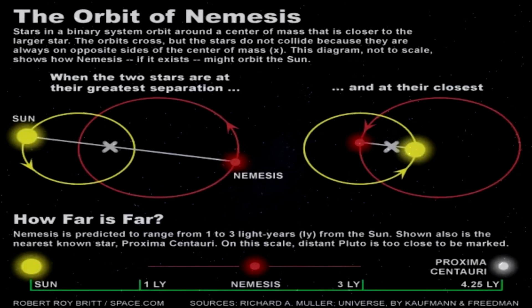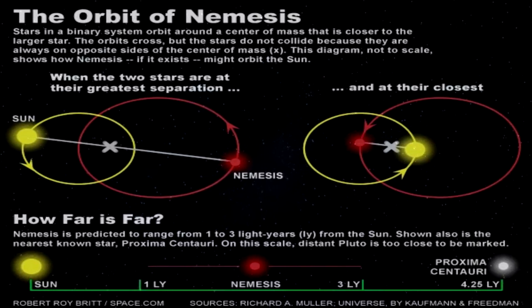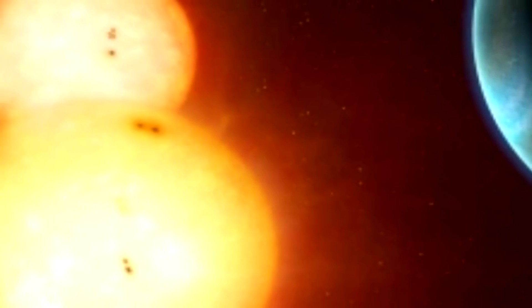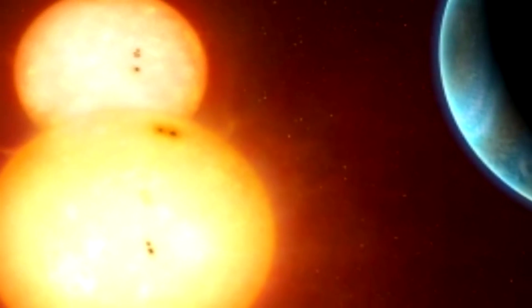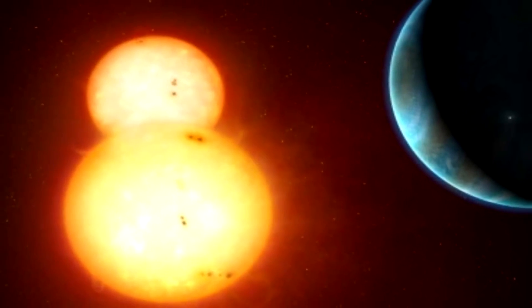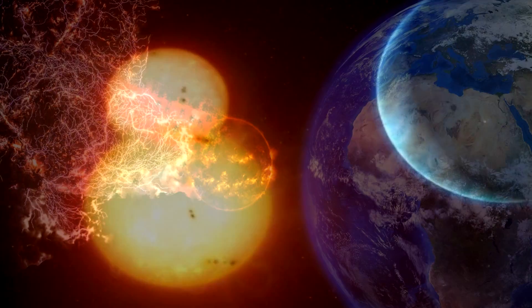That led a scientist 31 years ago to enunciate one of the most controversial astronomical theories of recent times. An article was published stating that our solar system is binary, that is to say, formed by two stars instead of one.